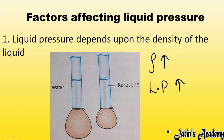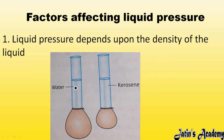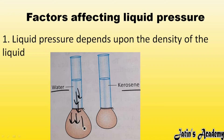If the density of a liquid is more, then liquid pressure is also more. Take the example of water and kerosene — water has more density than kerosene. In an activity, if a balloon is tied at the bottom of both containers, the water balloon will blow up more due to higher density and pressure, while kerosene's lower density gives less pressure. So more density means more liquid pressure, and less density means less liquid pressure.